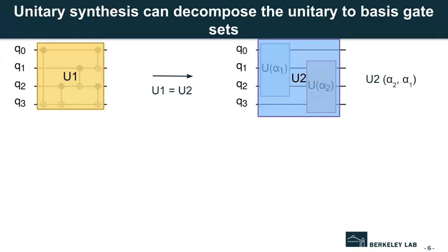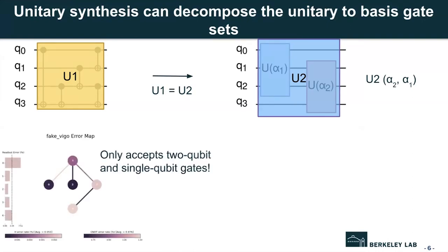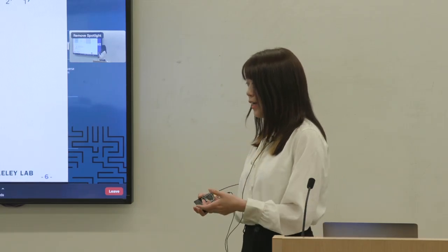So now let's say we've already found the parameters to make U1 approximately the same as U2. Here comes another challenge. If we want to run, so for the quantum hardware, it has its native gate sets, which are composed of some specific two-qubit gates and single-qubit gates. If we want to run a circuit on the hardware, the circuits must be composed,